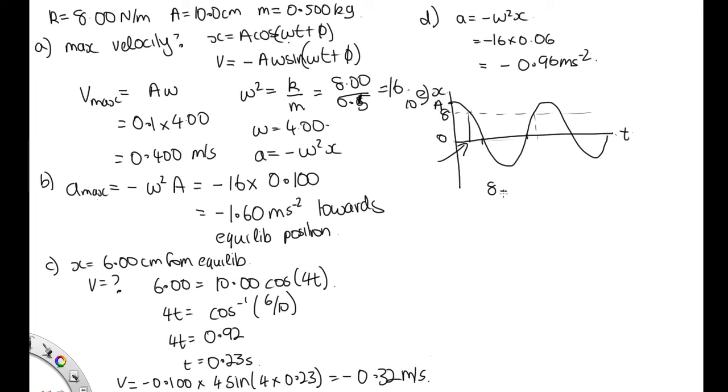Just substituting in here, we've got 8 is equal to 10 cos omega t, omega is 4t. So we just solve this like we did before, making sure the calculator's in radians. So we've got 4t is the inverse cos of 8 over 10. So that gives us t is equal to 0.1608.